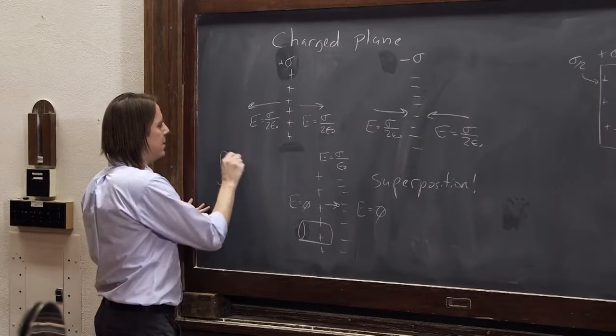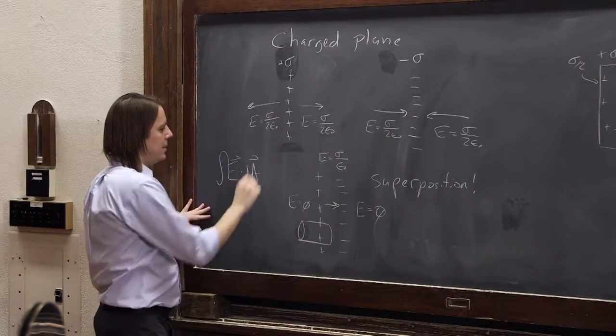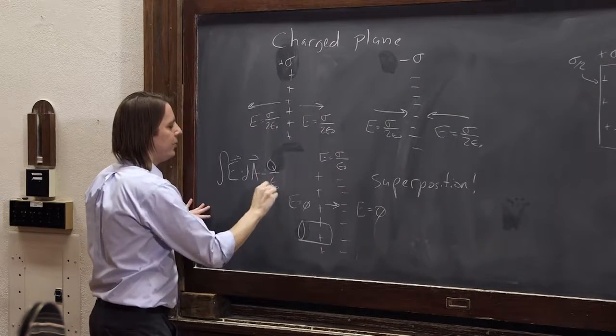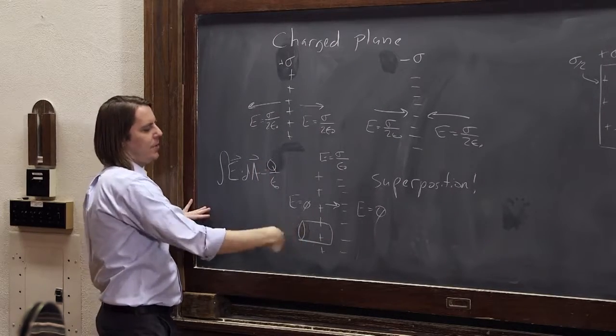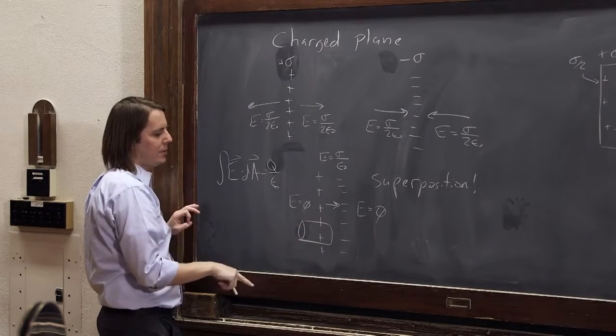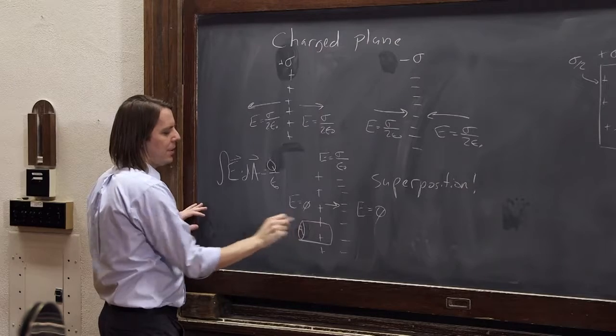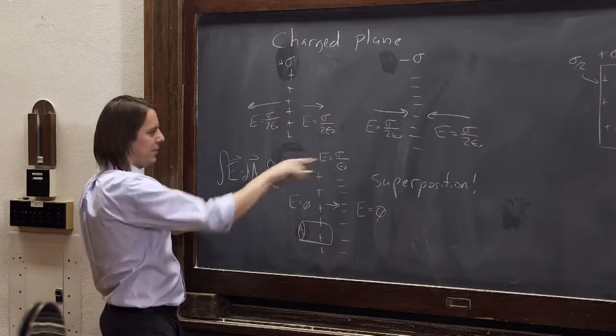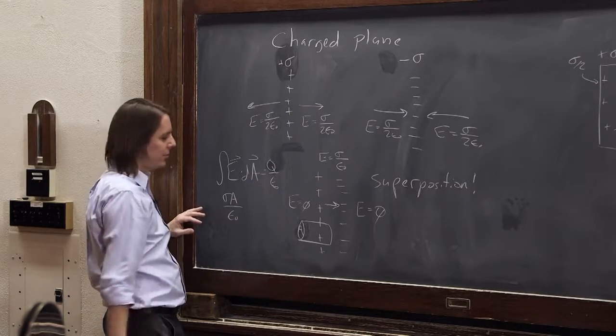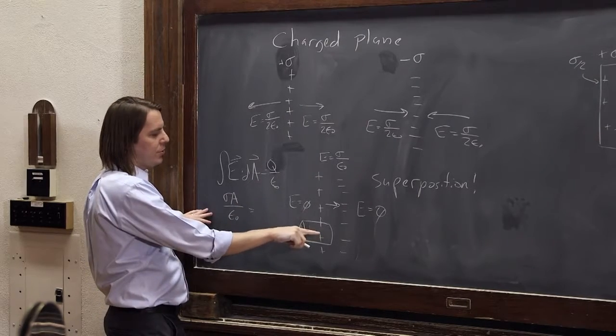Integral of E dot dA equals Q over epsilon naught. So the flux, there's no field out here, there's no field on the sides, it's all perpendicular, it's just out the end, it's going to the right. And this has some area A. So the flux is going to be sigma A over epsilon naught. There's just one surface that has flux.